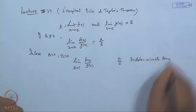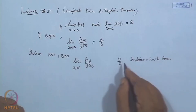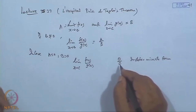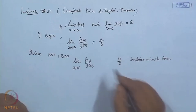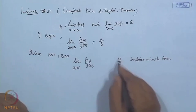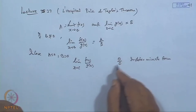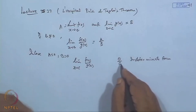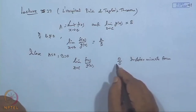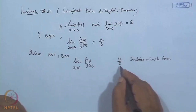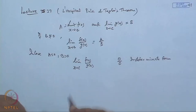Why indeterminate? Because you cannot say the value is 1, or some finite number, or that the value does not exist. In fact, for the 0/0 form, the limit may exist or may not exist.